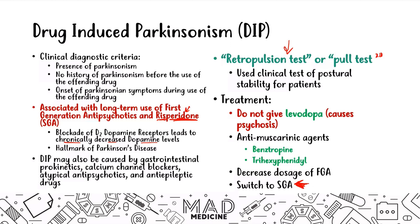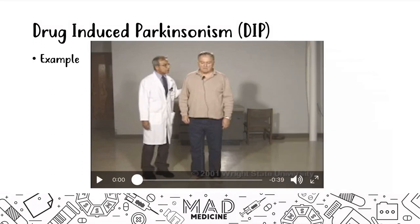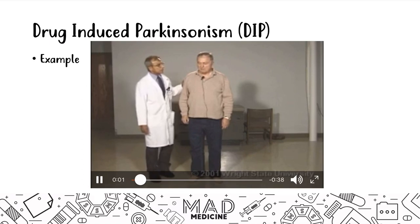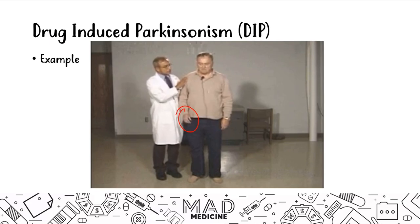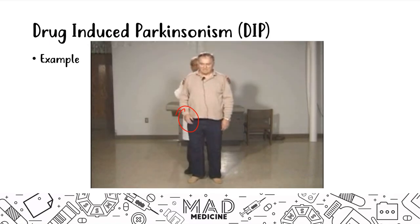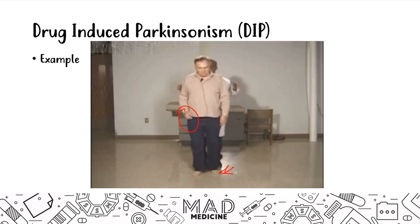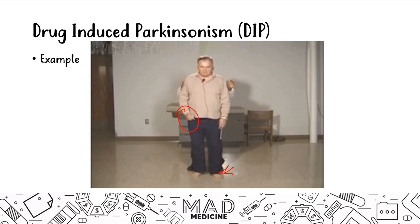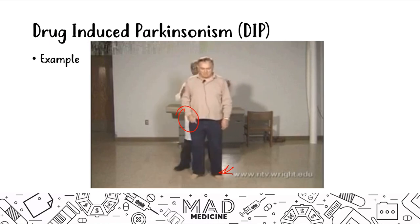This is an example of the retropulsion or pull test. The examiner holds the patient by the shoulders and pushes them forward, backward, or sideways. In a patient with drug-induced parkinsonism, the patient must move their feet several steps to stabilize and avoid falling — a sign of impaired postural stability. Normally you would not need to do that.